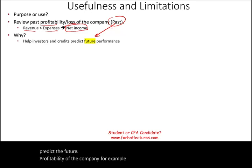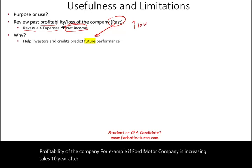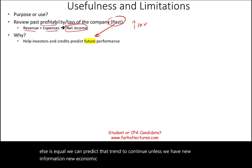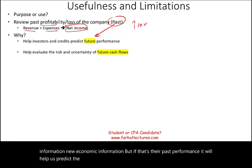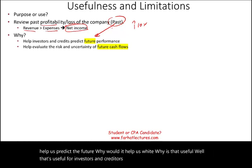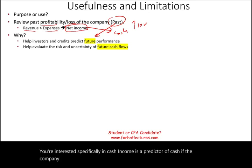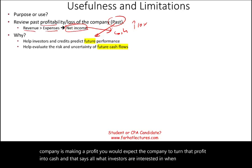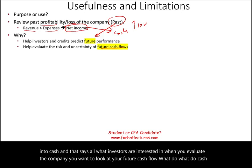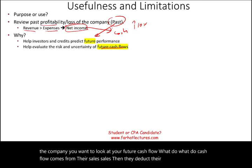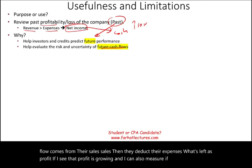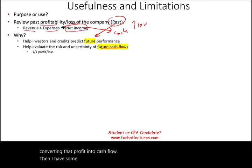For example, if Ford Motor Company is increasing sales or profit 10% year after year, giving everything else equal, we can predict that trend to continue unless we have new economic information. Why is that useful? It's useful for investors and creditors. As an investor or creditor, you're interested in income — and specifically in cash. Income is a predictor of cash. If the company is making a profit, you would expect them to turn that profit into cash. When you evaluate a company, you want to look at their future cash flow, which comes from sales minus expenses. If profit is growing and they're converting it into cash flow, you have some certainty that cash will come in future years — showing year over year profit or loss.